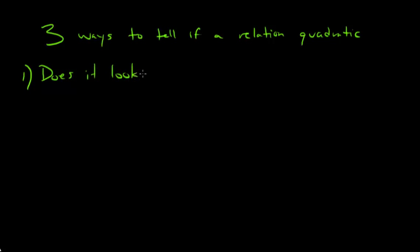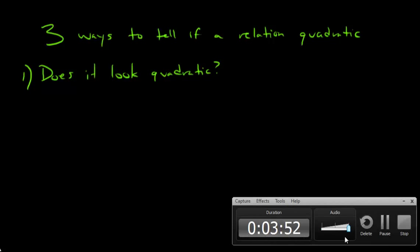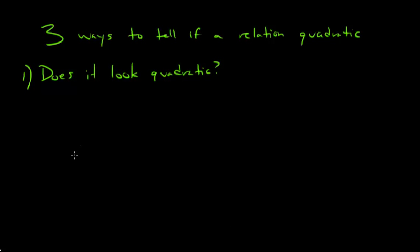So let's start fresh here for a second and figure out how we can determine whether a relation is quadratic or not. There are actually three ways to tell if a relation is quadratic. Number one, does it look quadratic? Well, what does a quadratic relation look like? The only way we can tell whether it looks quadratic is to graph it.